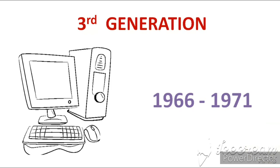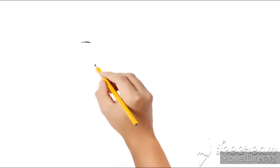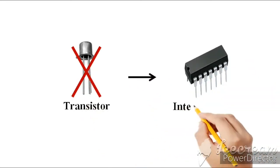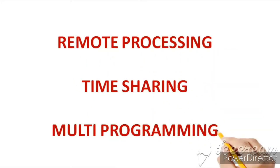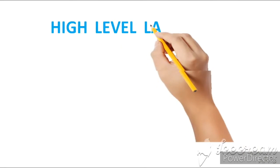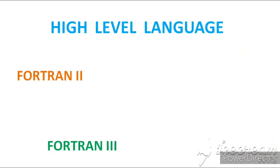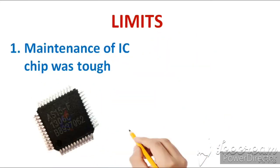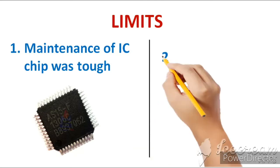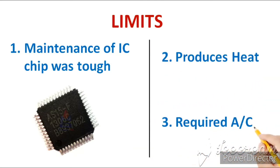Now friends, let's move to our third generation. Third generation computers' period of time is 1966 to 1971. In this generation, integrated circuits were used in place of transistors, which made them more reliable and more trustworthy. Remote processing, time sharing, and multiprogramming operating systems were used. Additionally, high-level languages were used such as FORTRAN II, FORTRAN III, FORTRAN IV, COBOL, Pascal, PL/1, ALGOL 68, et cetera. Limits: first, maintenance of IC chips was tough. Second, they still produced a considerable amount of heat, which meant air conditioners were still required.